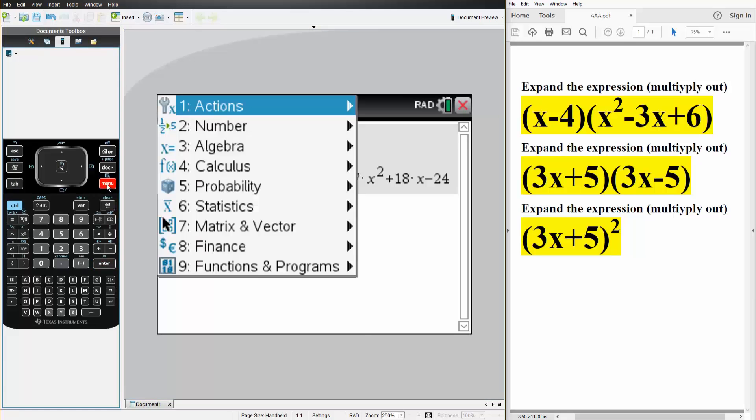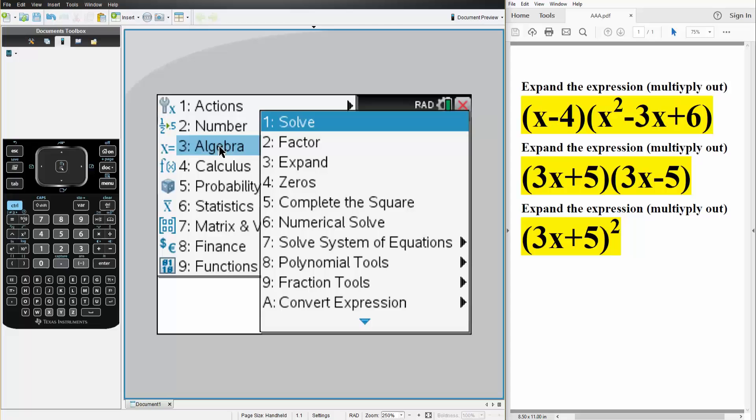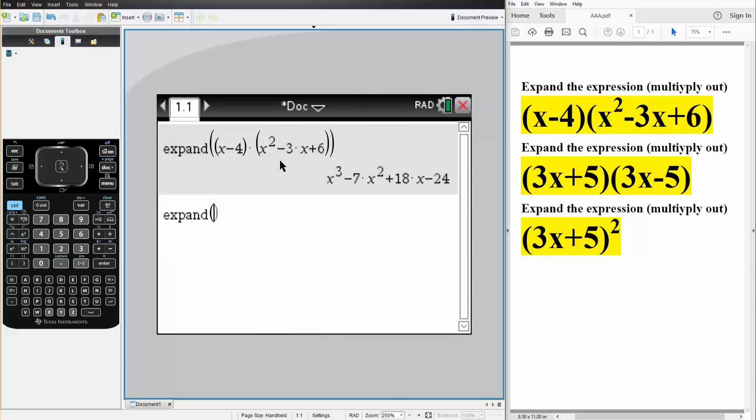Same exact method. Menu, 3, algebra, 3, expand. We write what we have. So we have parentheses 3 times x plus 5 times parentheses 3 times x minus 5. And so what we have is expand in our expressions.